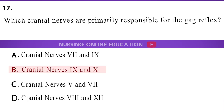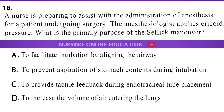The answer is option B: Cranial nerves 9 and X. A nurse is preparing to assist with the administration of anesthesia for a patient undergoing surgery. The anesthesiologist applies cricoid pressure. What is the primary purpose of the CELIC maneuver? A. To facilitate intubation by aligning the airway. B. To prevent aspiration of stomach contents during intubation. C. To provide tactile feedback during endotracheal tube placement. D. To increase the volume of air entering the lungs.